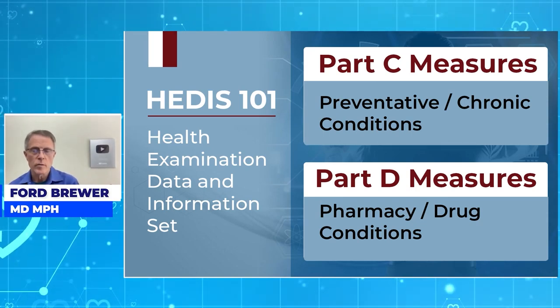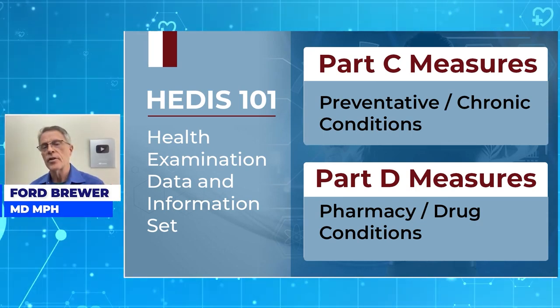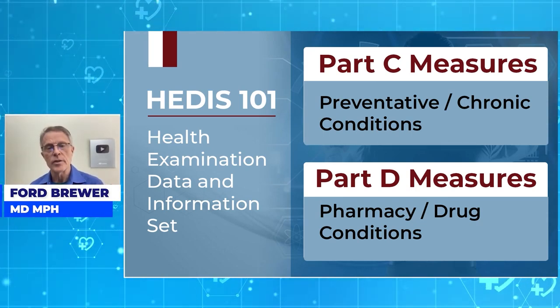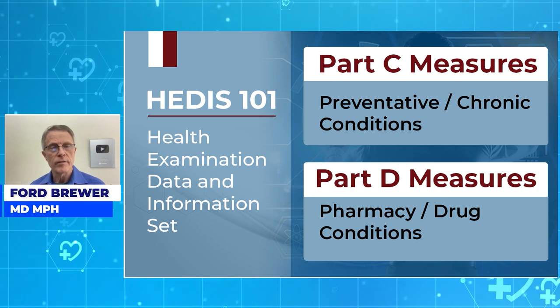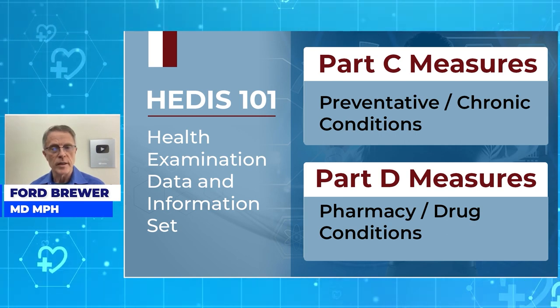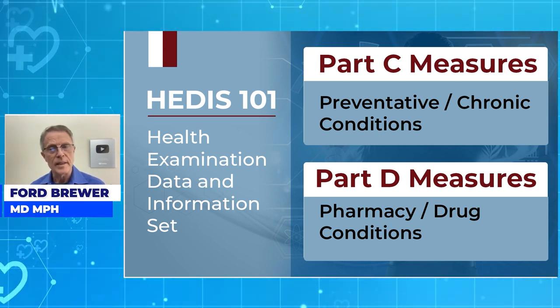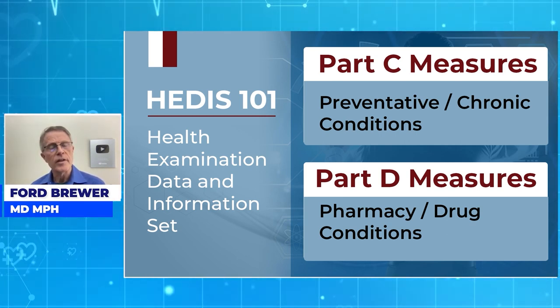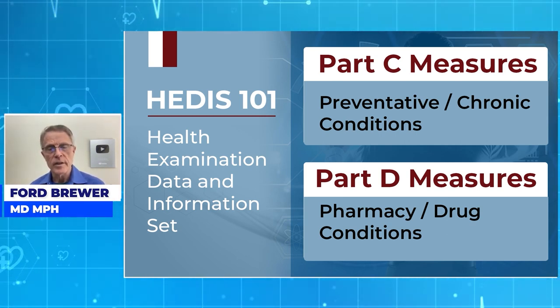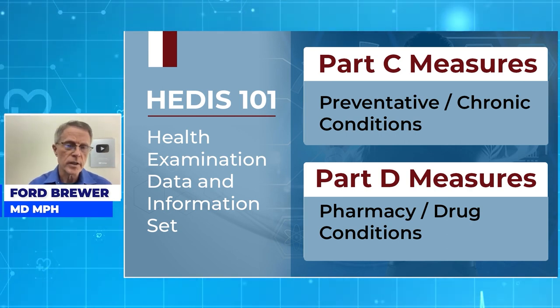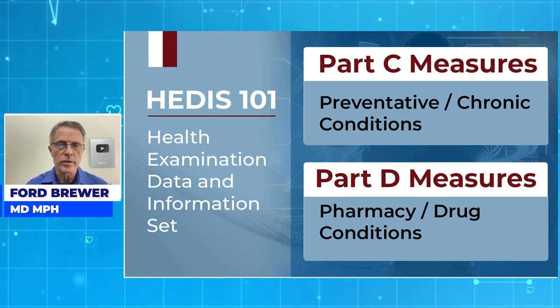This is HEDIS 101. HEDIS stands for Health Examination, Data and Information Set. There's Part C and Part D. Part C covers Preventive and Chronic Conditions, and Part D covers Pharmacy and Drug Measures.